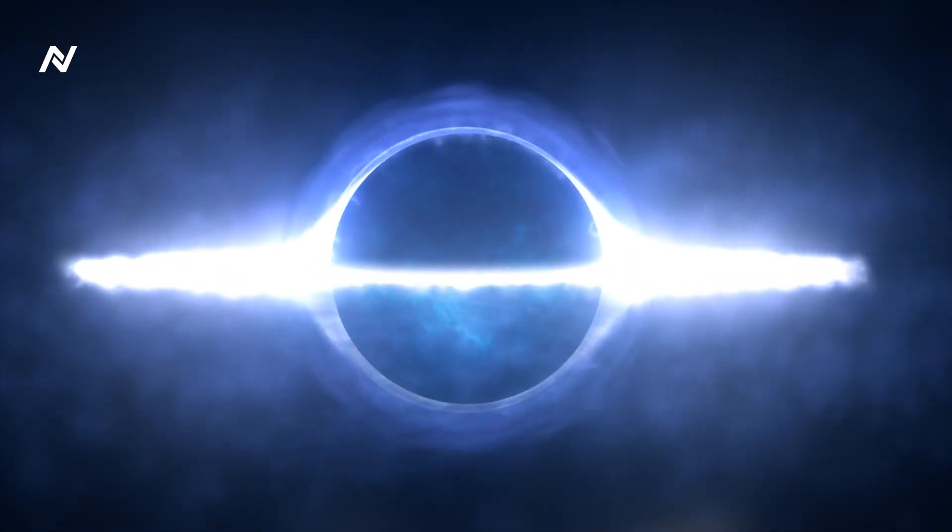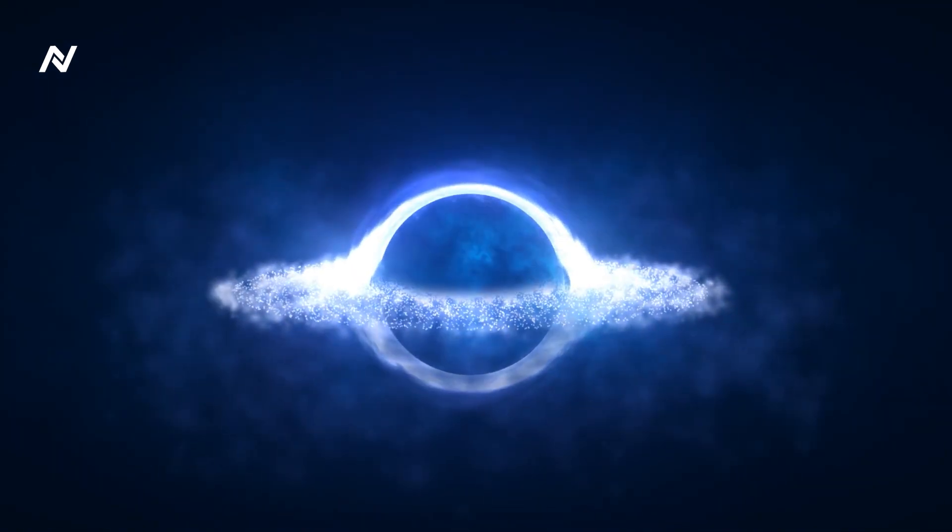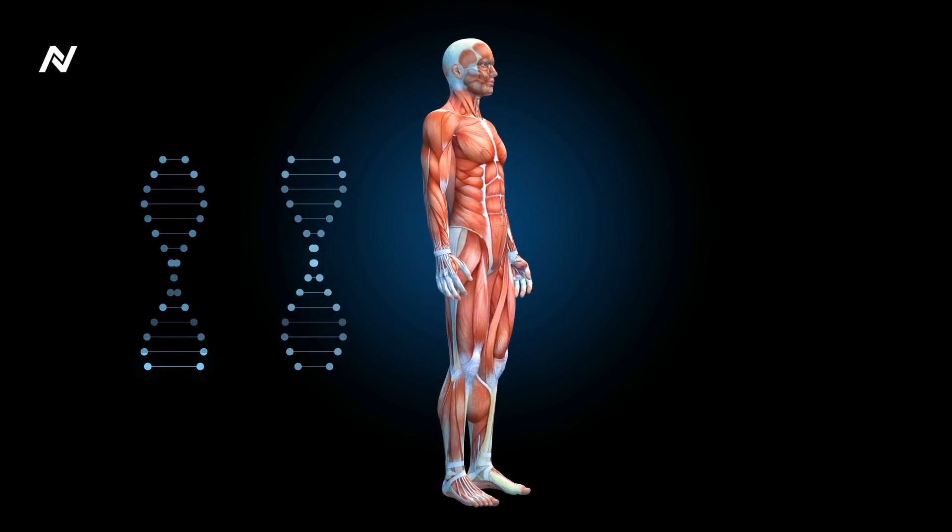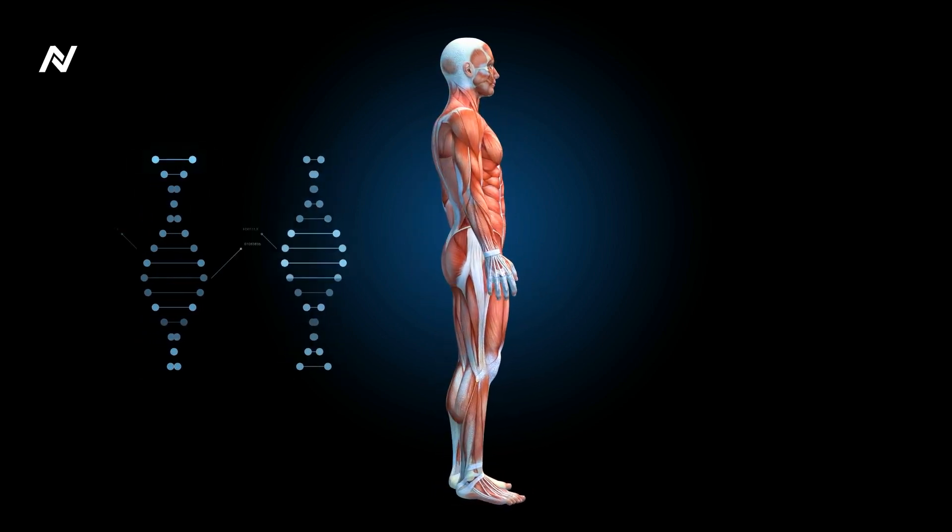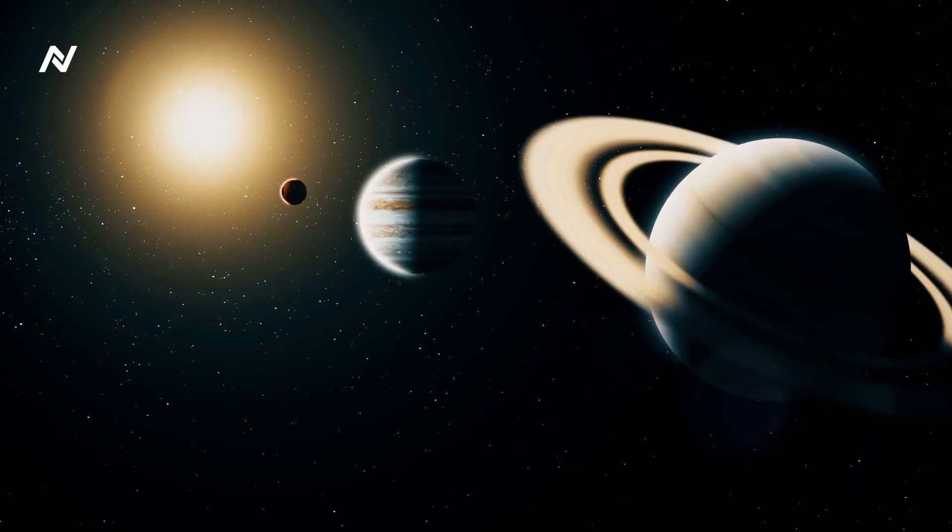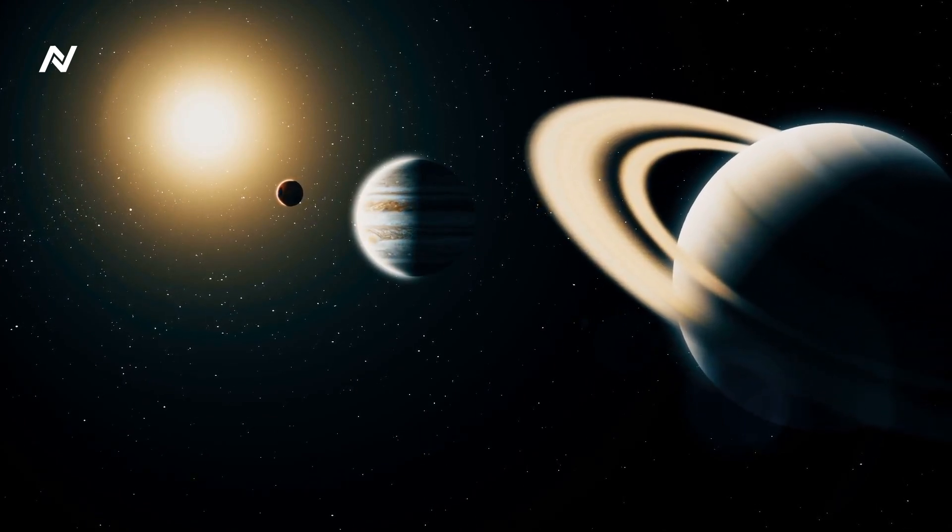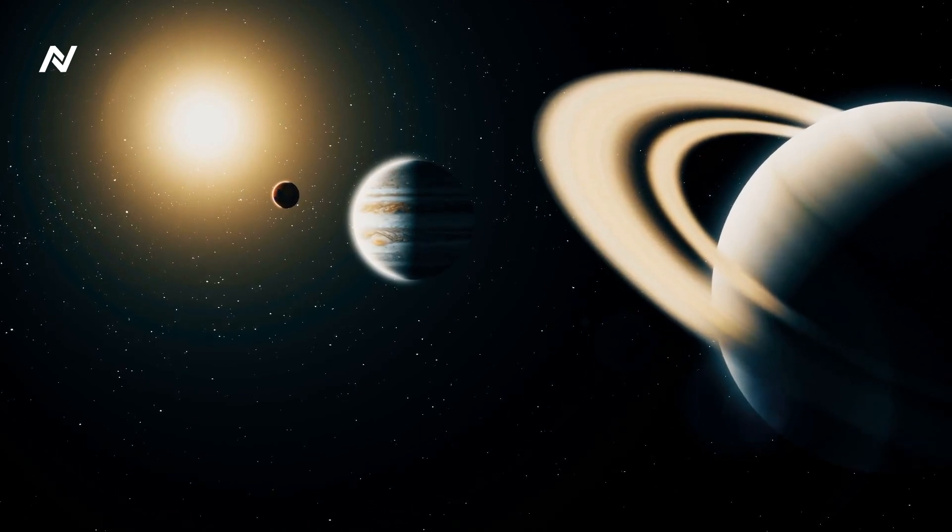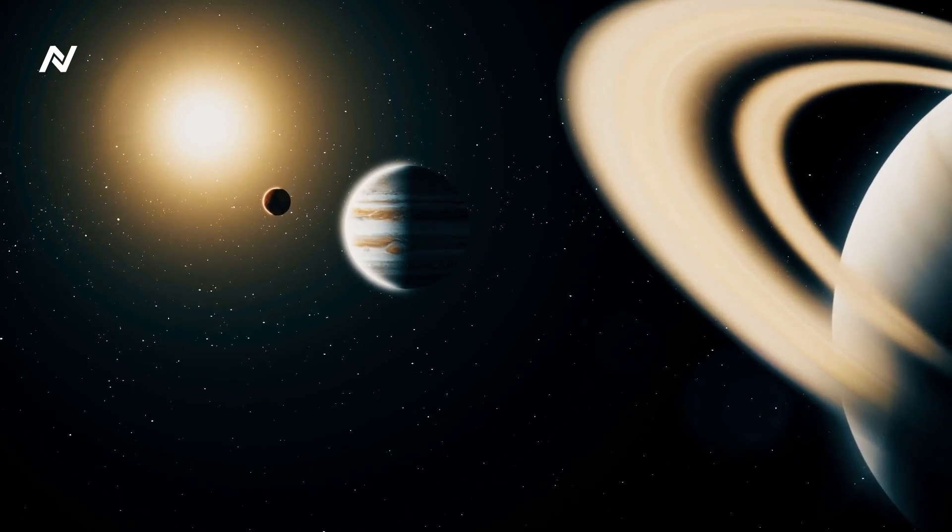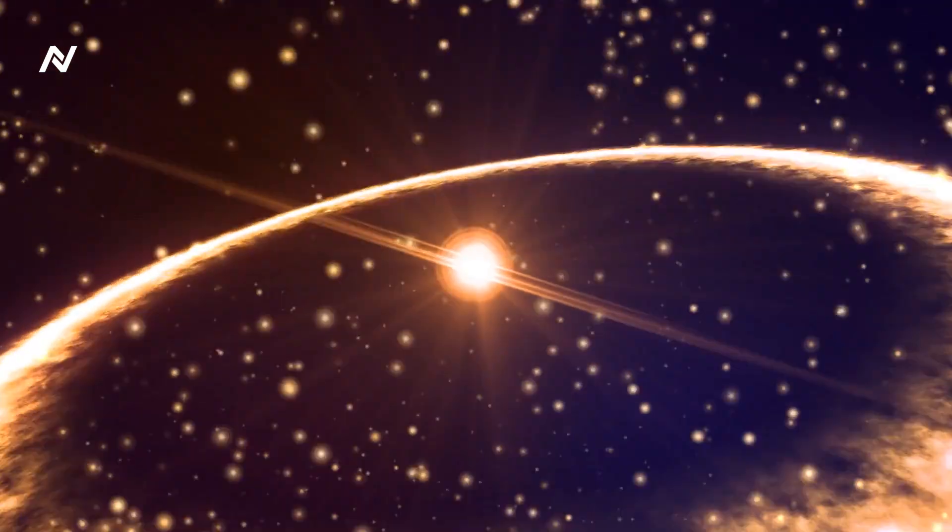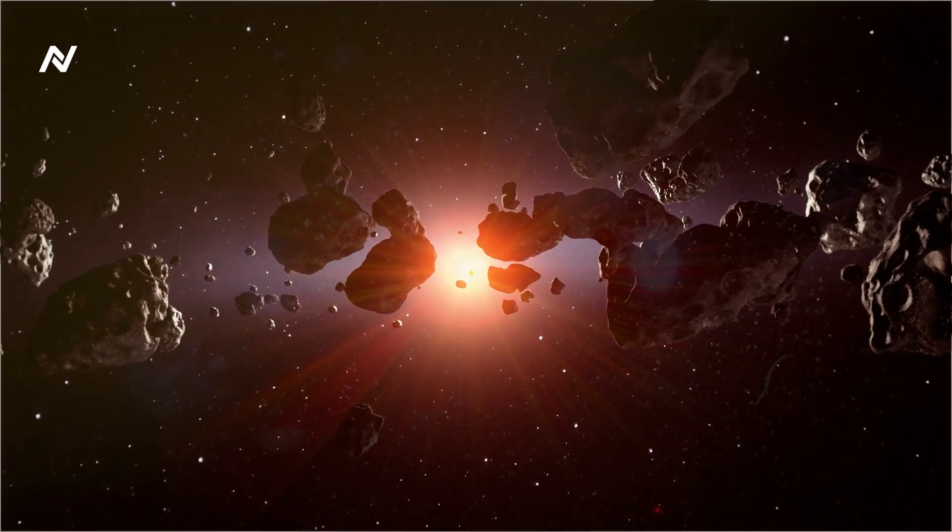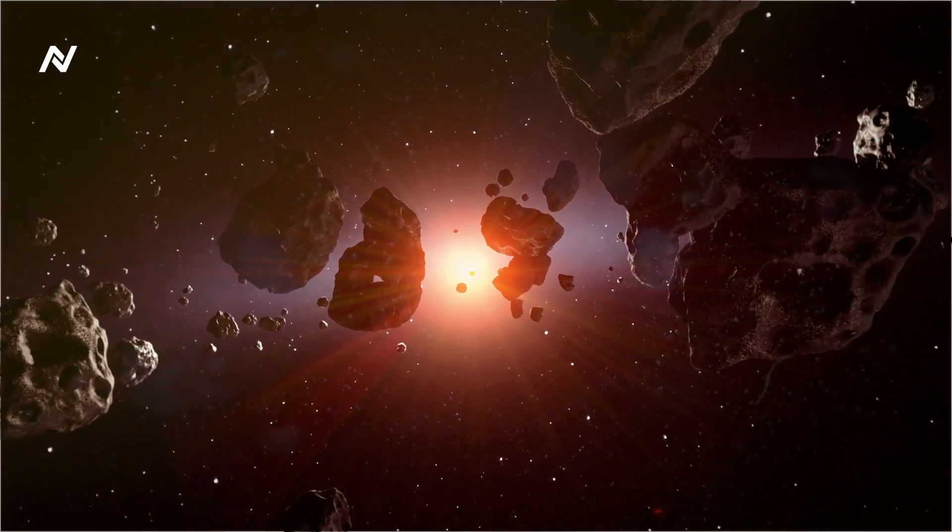Here's something that will make you think twice about your origins. Every atom in your body, from the carbon in your muscles, to the calcium in your bones, was forged in the heart of a star. Billions of years ago, stars much larger than our Sun burned through their nuclear fuel and exploded in massive supernovae. In the process, they created the heavy elements that now make up planets, oceans, and even you. So the next time you look up at the night sky, remember, you're not just looking at distant stars, you're looking at where you came from. You're literally made of stardust.